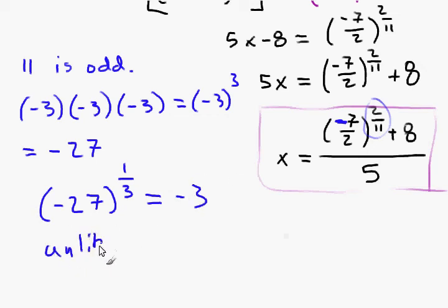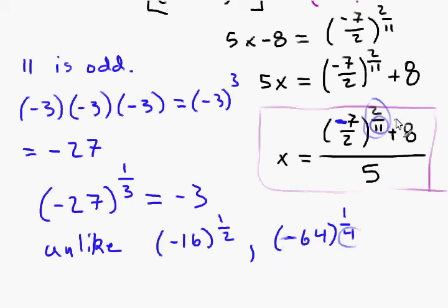Unlike, say, negative 16 to the one-half power, or negative 64 to the one-fourth power, these aren't real numbers. Even negative, doesn't work. But, with an odd denominator, it does.